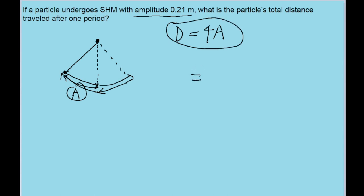So the answer to this problem, we're just going to take the amplitude, it gives us 0.21 meters, and multiply it by four. And that gives us a distance of about 0.84 meters. And that is the total distance traveled by the particle.